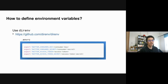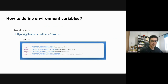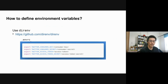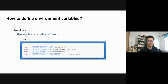So, how do you define those environment variables? My recommendation is to use the `direnv` command line tool. By creating a `.envrc` file per directory, you can load and unload a specific set of environment variables per directory automatically.